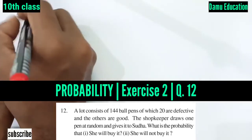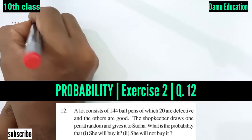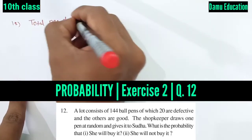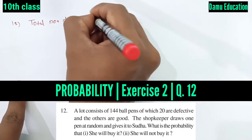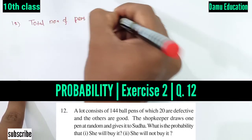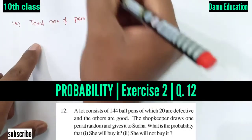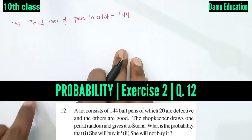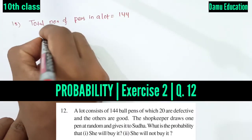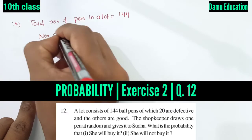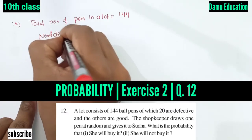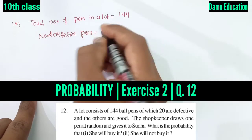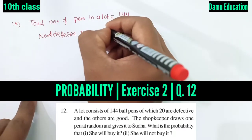First, what is the total number of pens in a lot? The total number of pens in a lot will be equal to 144. Then, what are the number of defective pens? Number of defective pens — how many are there? 20.